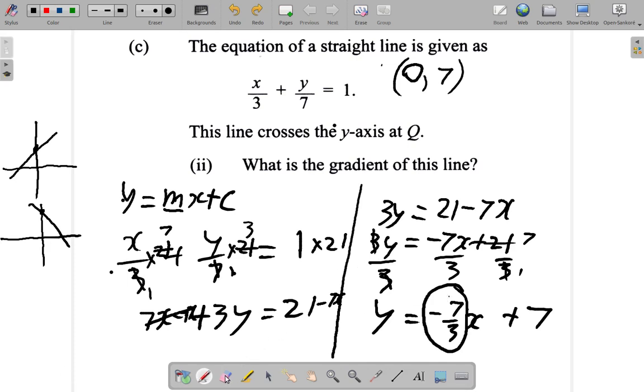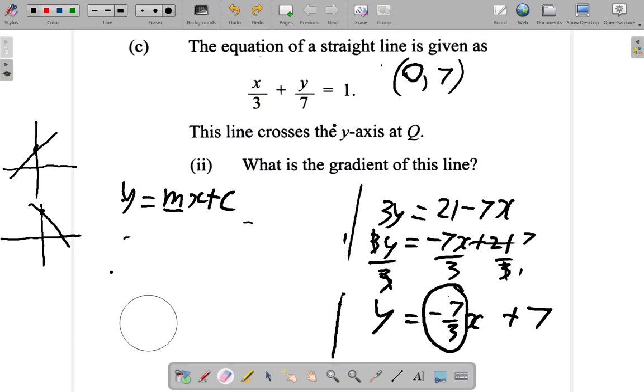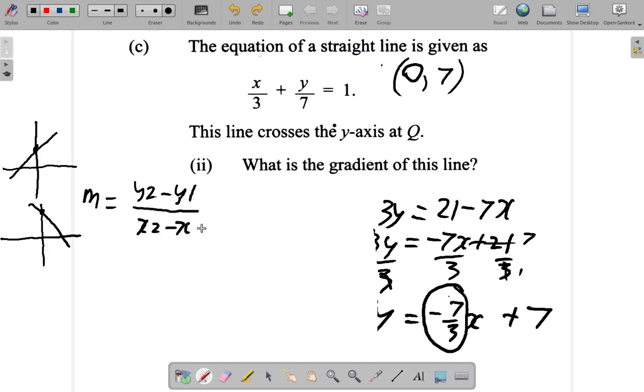Let's look if we have another way to figure out what the gradient is. Suppose I use this formula. The gradient, let's use m, is equal to y2 minus y1, that's the rise, over x2 minus x1, that's the run. You remember, if we have a case like this, and we have point 1 (x1, y1) and point 2 (x2, y2), we form a right-angle triangle. y2 minus y1 would be the difference in the height, that's the rise, over x2 minus x1 would be the difference in the length, that's the run. So we use this formula.